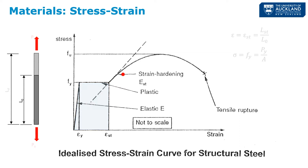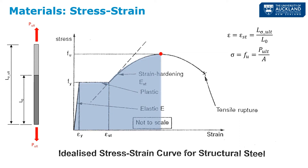If we continue to stretch this piece of steel, we go all the way up to some ultimate stress. This ultimate stress is particularly used when we're doing tension design. In a later video, we will design the gross section for yield and the net section for rupture, and this rupture will use this ultimate stress — that's the highest capacity the material has.